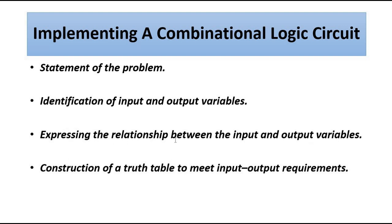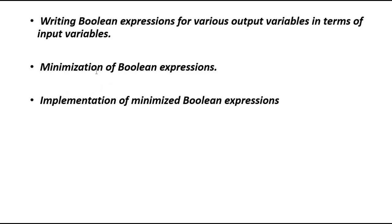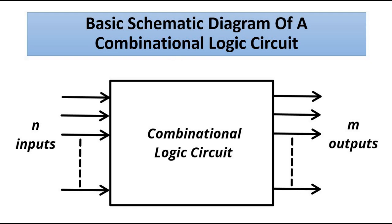Next, we express the relationship between input and output variables — whether it's an AND, OR, NOT, sum of products, product of sum, XOR, or XNOR relationship — and write the equation. Then we draw a truth table, and in some cases a Karnaugh map, to meet the input and output requirements. The Karnaugh map is used for simplification and minimization of boolean expressions. Finally, we implement the simplified boolean expression.